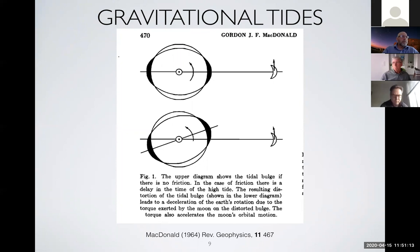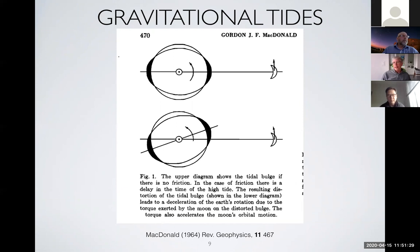Q: During Pangaea, was the dissipation different? A: That's a complicated question. If you just have one major continent, the ocean is effectively larger, so the resonant periods in the ocean shift to longer periods. Since the day length hasn't changed, you're farther off resonance, so the tidal quality factor would be higher and dissipation lower. Yes, with just one big continent the tidal quality factor is likely higher.